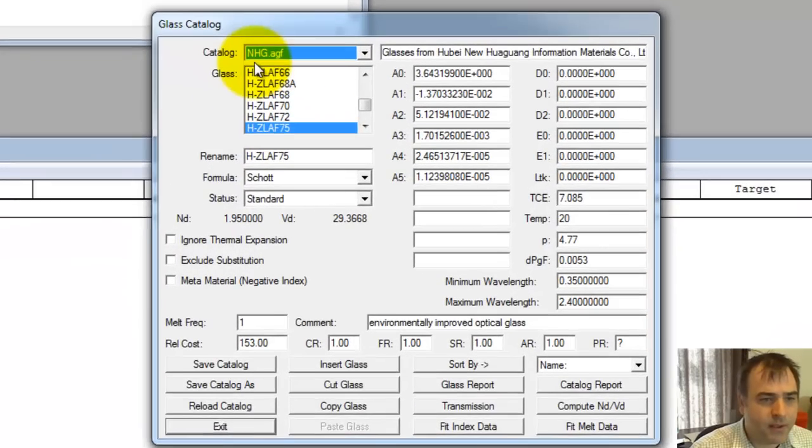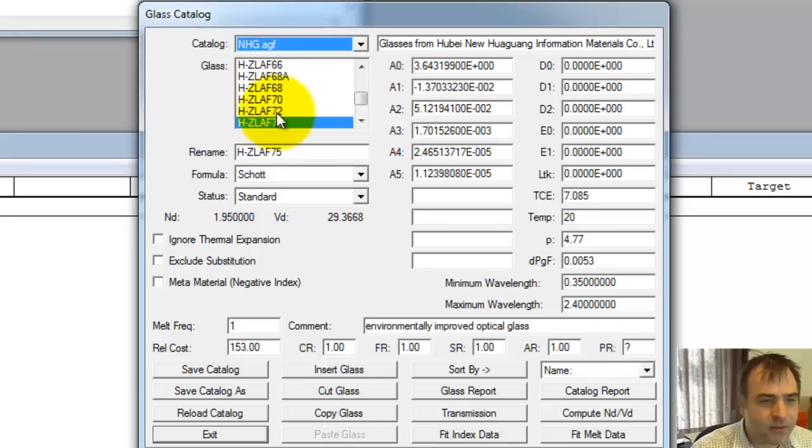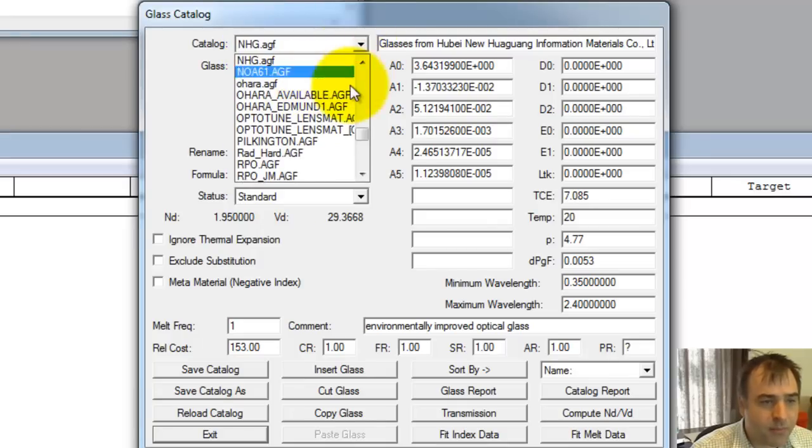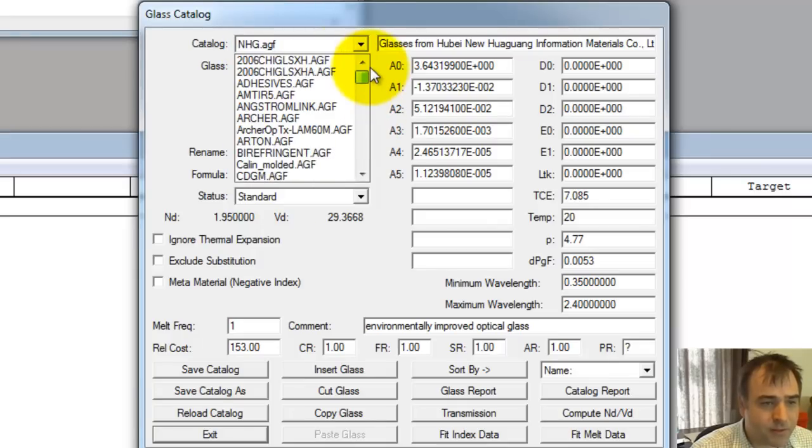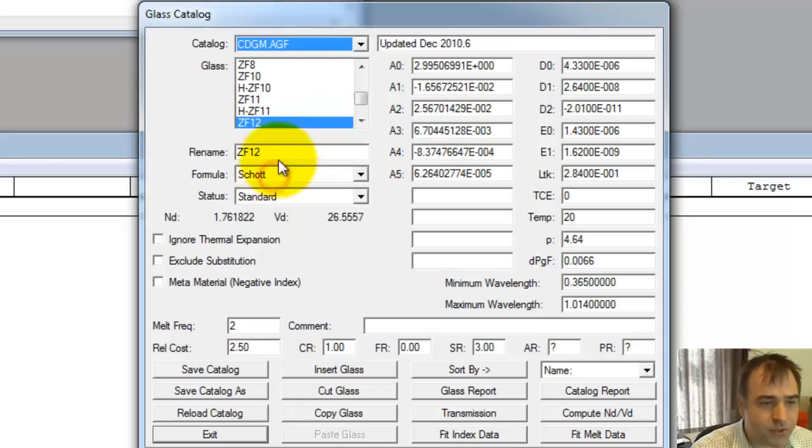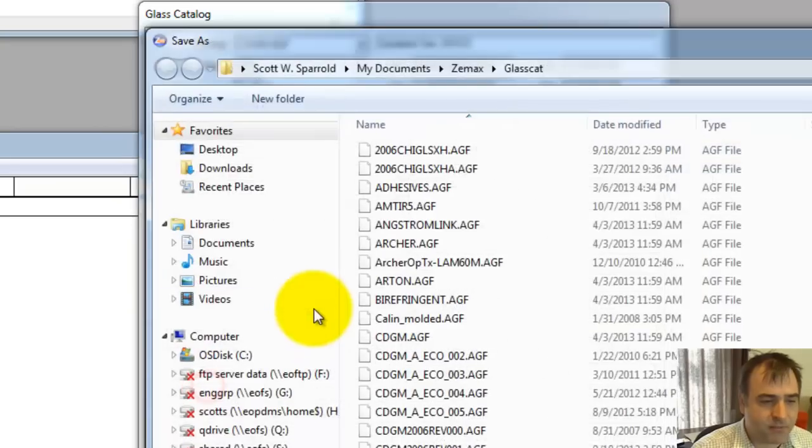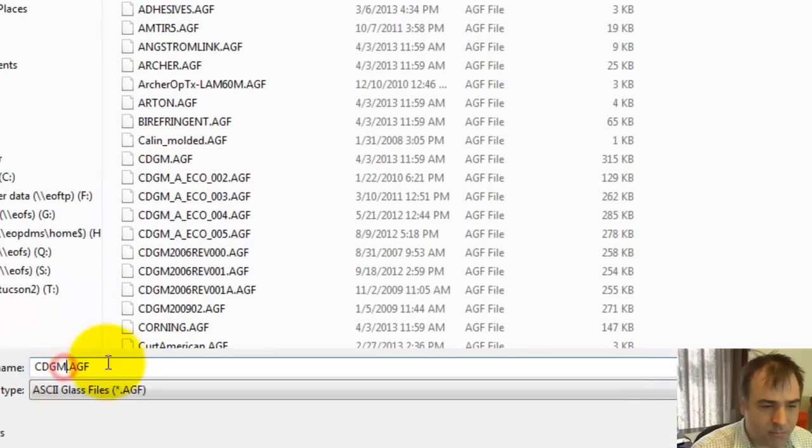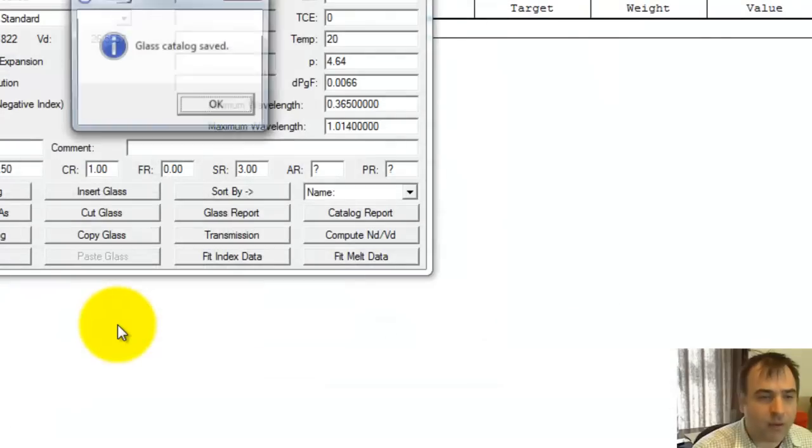Let's just go to the glass catalog. I don't know what glass this is. Let's re-enter it from scratch. We'll start with CDGM. We're just going to save so I don't corrupt this, the CDGM glass catalog that ships with ZMAX. I'm going to save it as something else. We're going to call it CDGM_OR for Optics Realm.